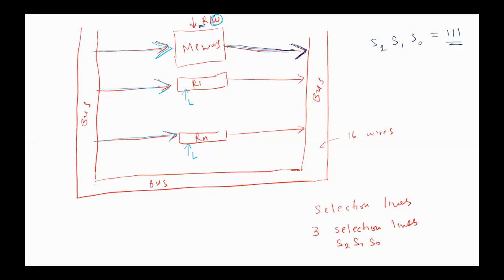If we want to read or write from memory, first we have to select the memory unit. In the basic computer, the selection lines are 111 for the memory. On the write operation, the write control signal is activated, allowing the contents of the bus to be stored at the addressed memory location. On the read operation, the memory is selected again, the read control is activated, and the contents of the addressed memory location pointed to by the address register are transferred to the bus.